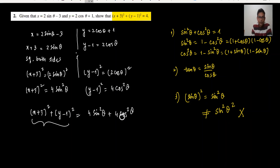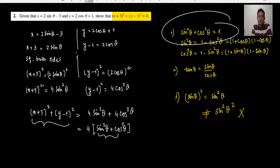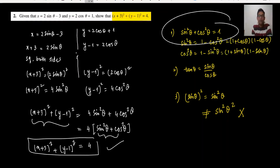Adding: x plus 3 whole squared plus y minus 1 whole squared equals 4 sine squared theta plus 4 cos squared theta. The common factor is 4, so we get 4 times the bracket sine squared theta plus cos squared theta. Since sine squared theta plus cos squared theta equals 1, this becomes 4 times 1 equals 4. So x plus 3 whole squared plus y minus 1 whole squared equals 4, and we have done question number 2.